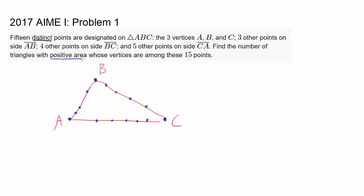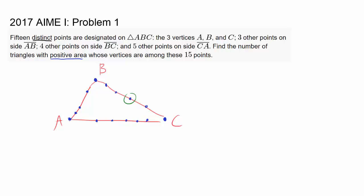We need to find the number of triangles with positive area whose vertices are among these 15 points. If you pick points on different sides, you can draw a valid triangle. But if all three points are on the same side, you get a degenerate triangle — just a line segment — which does not have positive area, so it doesn't count.